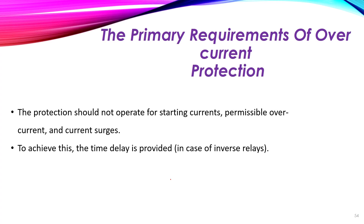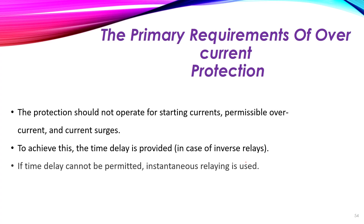Both inverse and constant-time relays provide a time delay to prevent the over-current protection from operating during starting conditions, as will be discussed further with settings examples in the next lecture. However, when no time delay can be permitted in a particular application, an instantaneous relay is used, which operates as fast as possible when a fault occurs.